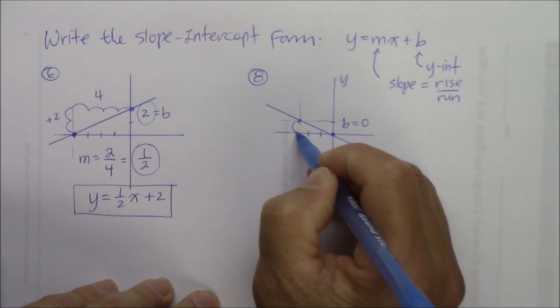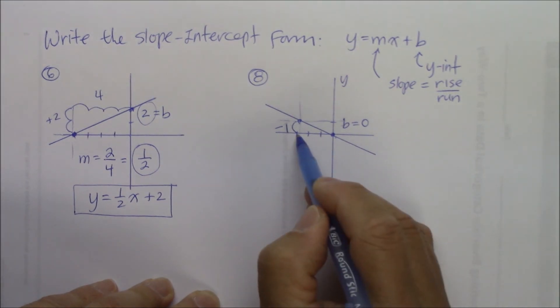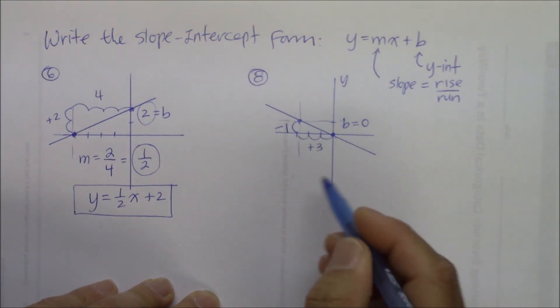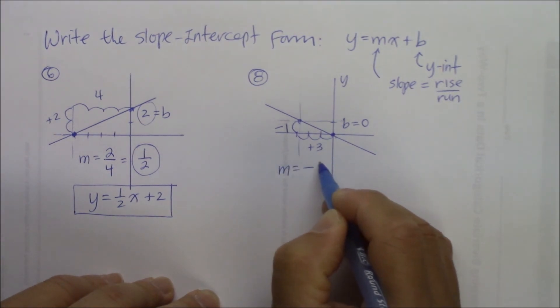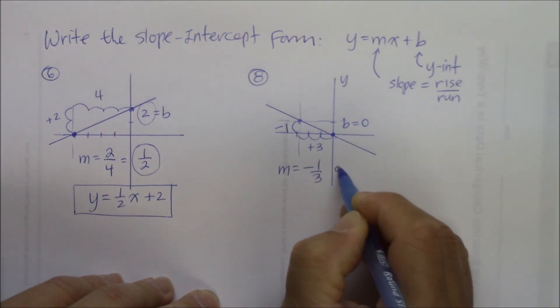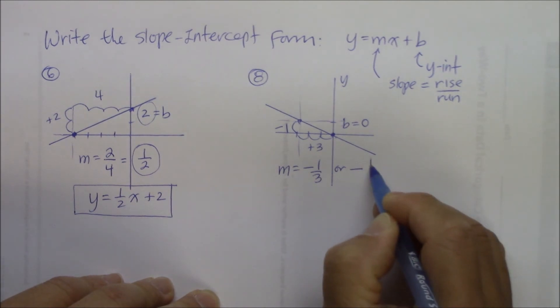So you go down one, which is negative one, and one, two, three to the right. So the rate of change, or the slope, rise over run, it is negative one over three. Or it's just simply a negative quotient of one-third.